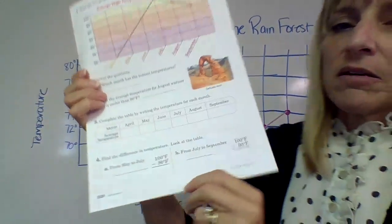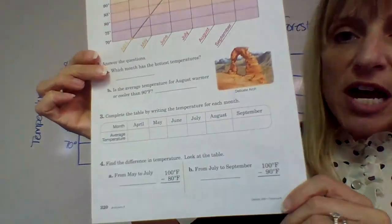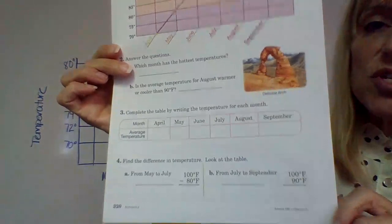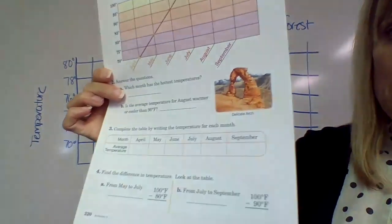The same for June, July, August, September. And then number four, you are subtracting temperatures and you will need to borrow because there are zeros at the top.